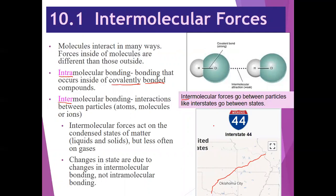An interstate we're probably most familiar with is Interstate 44 north of Springfield. You can see it outlined in red — it starts down at Wichita Falls in Texas, goes through Oklahoma and Oklahoma City, enters Missouri around Joplin, through Springfield, and ends in the St. Louis area. That's how I remember that intermolecular bonding goes between particles, just like interstates go between states.